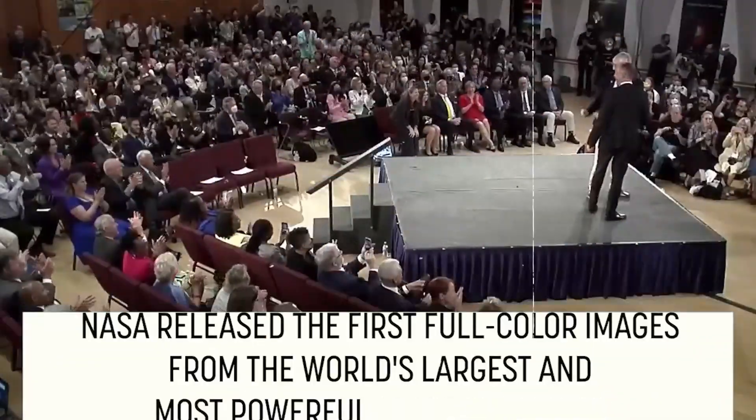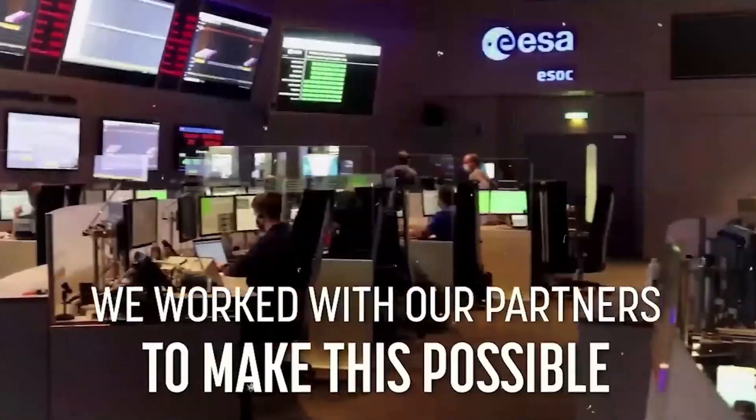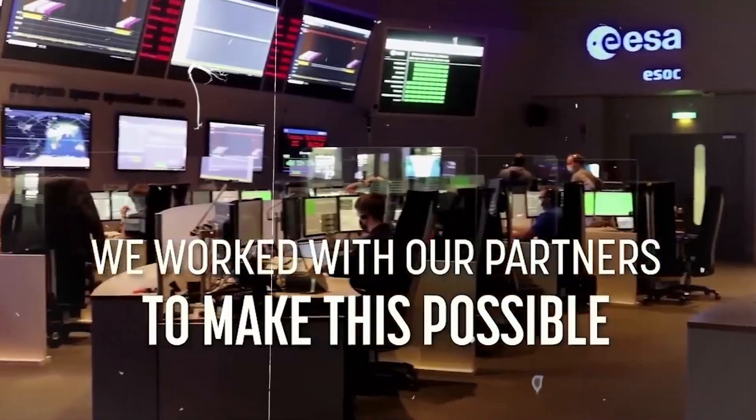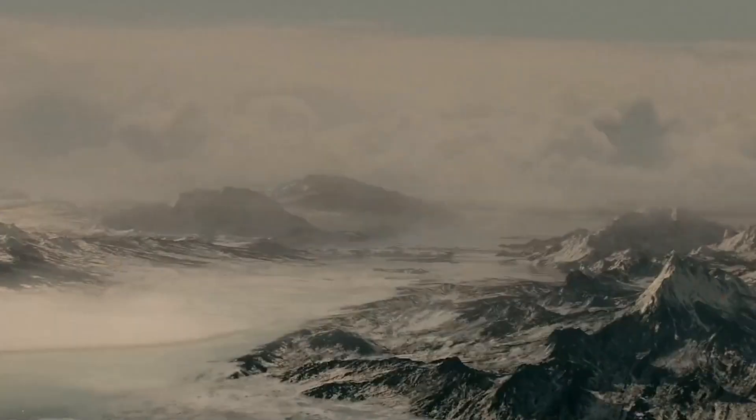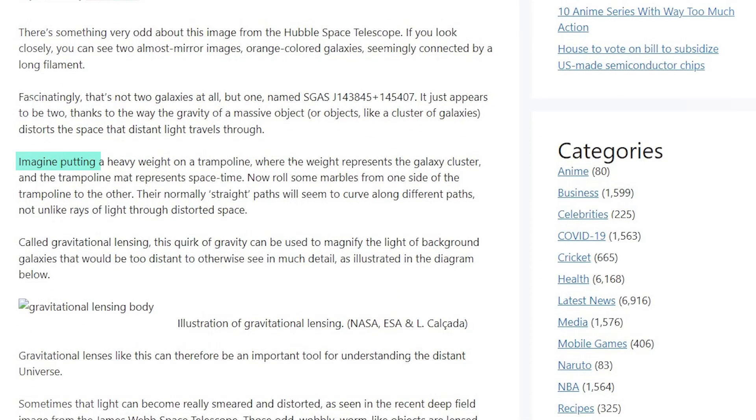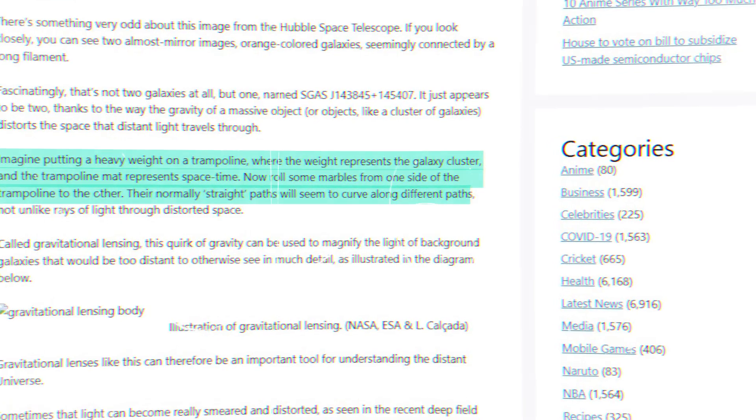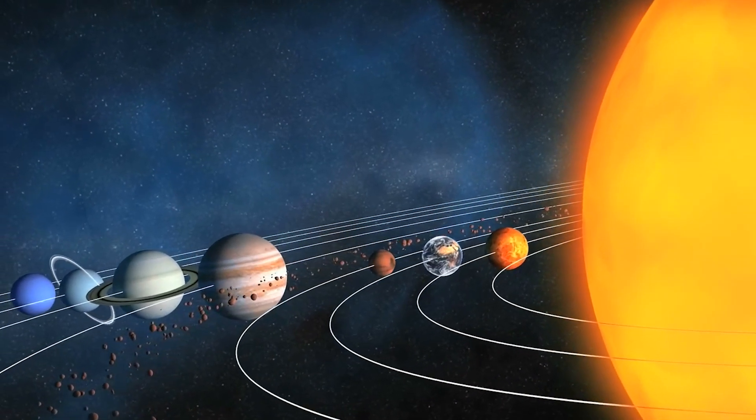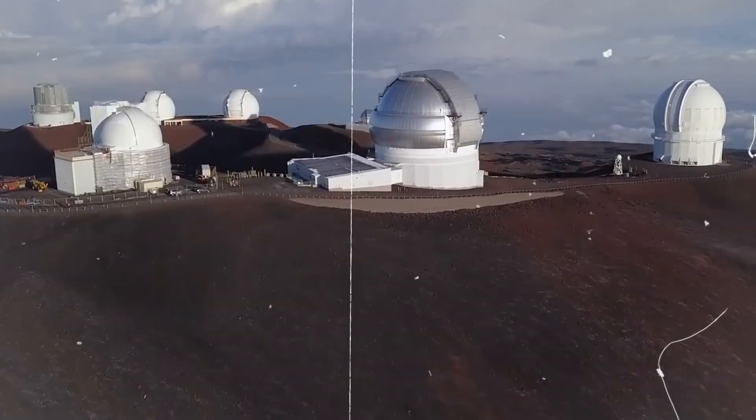The same force that makes humans stay with their feet on Earth is the cause of many of the optical illusions we can see in those space photos. Quote, imagine putting a heavy object on a trampoline, where the weight represents the galaxy cluster and the canvas represents space-time. Now throw some marbles from one side of the trampoline to the other. Their normally straight paths will appear to curve until they take different paths, detailed the science outreach platform Science Alert about the case of the twin galaxies.